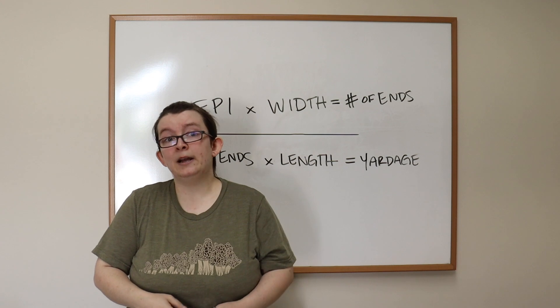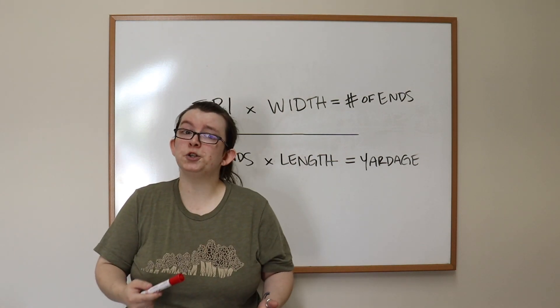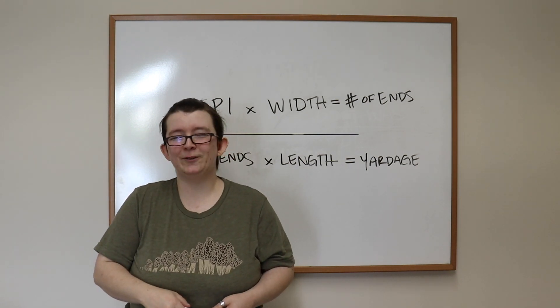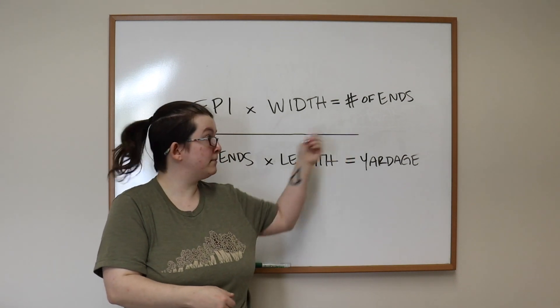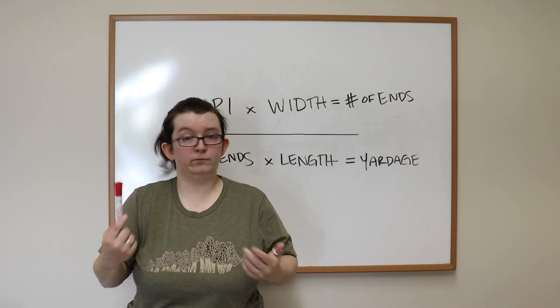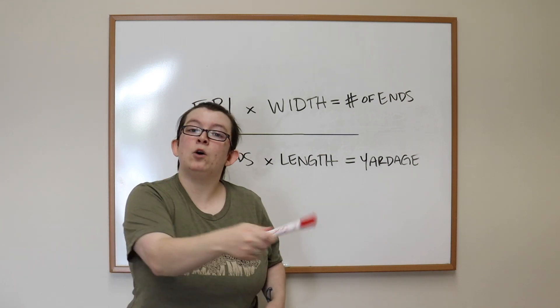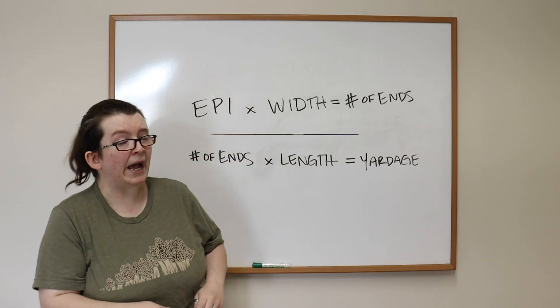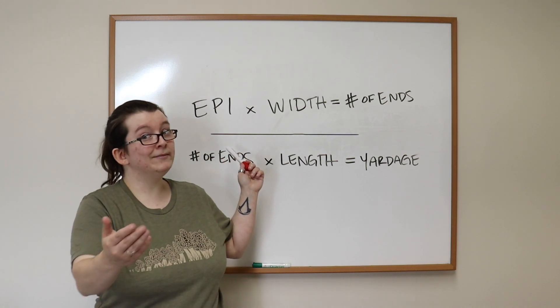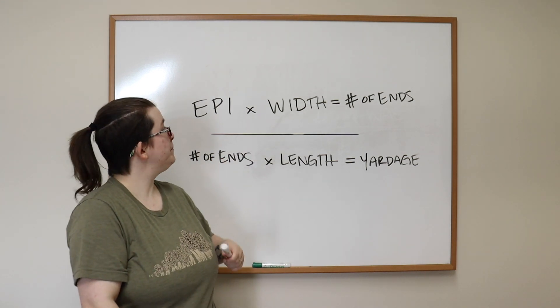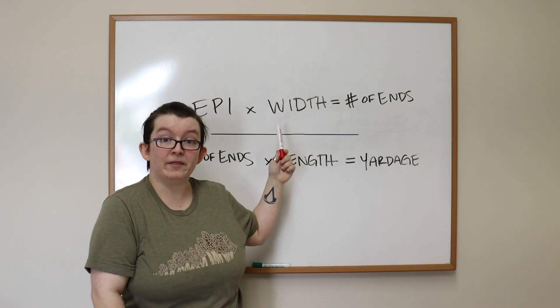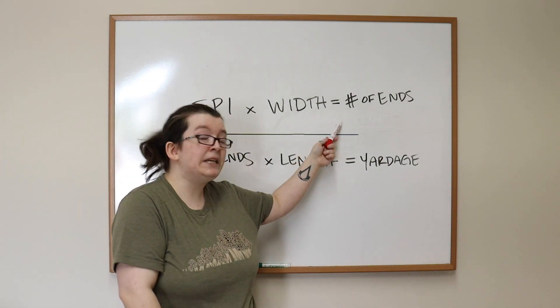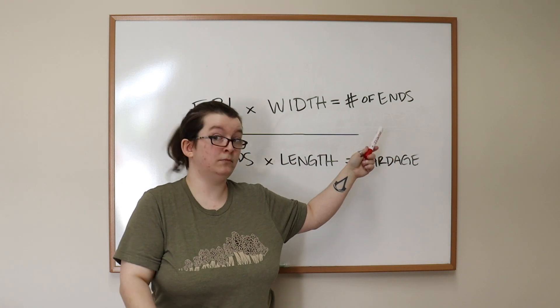These two equations, when used together, is going to give you yardage. So if you need to calculate yardage in a particular way later on down the line when you are a more advanced weaver, then you can do that using these same sort of pathways here, but with extra steps included. But let's back all the way up to simple stuff and start with just this. So what we have, EPI, or ends per inch, like we just talked about, multiplied by your width. And by that, I mean the width on the loom, the width of your warp, is going to give you the number of ends in your project.